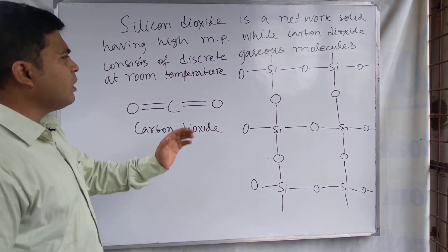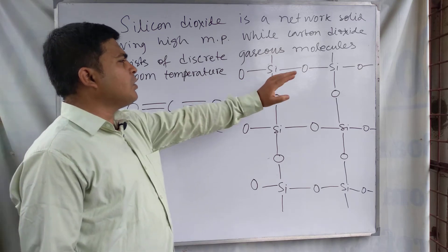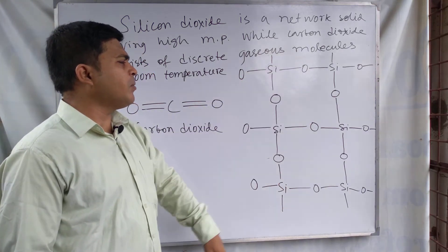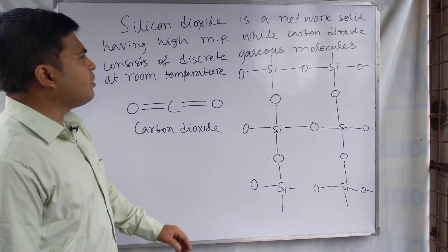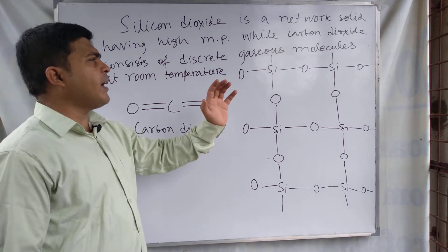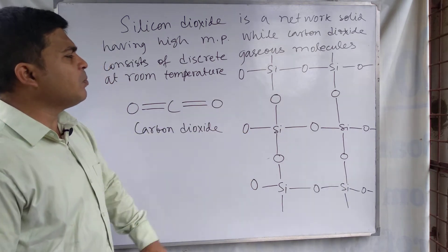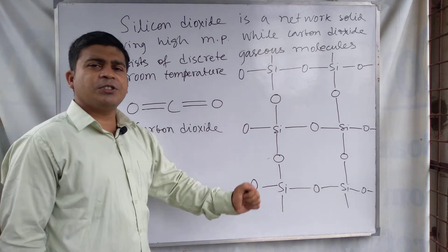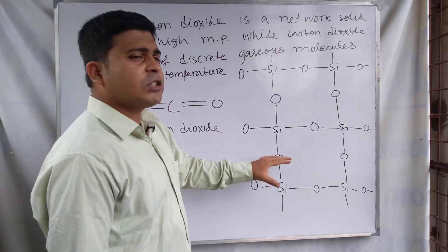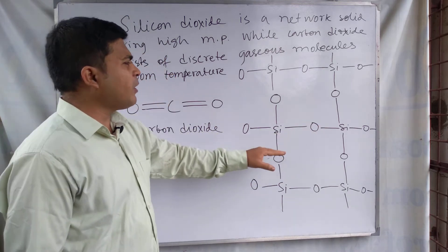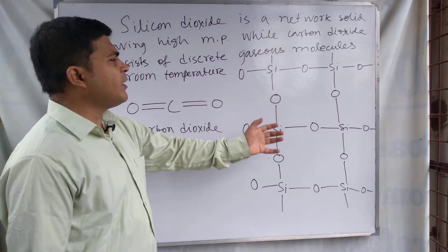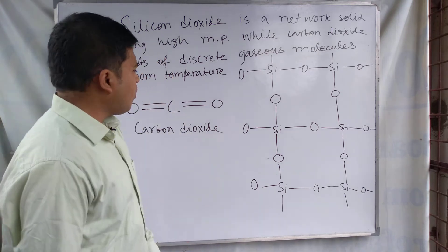In this arrangement, silicon forms a long network chain structure. For this reason, silicon dioxide is solid and has a high melting point, because high heat energy is required to break this network structure of silicon dioxide.